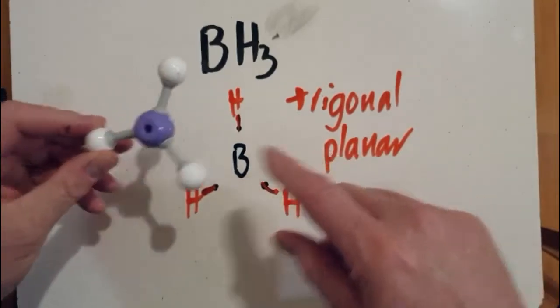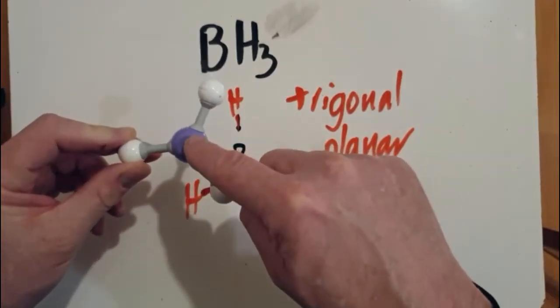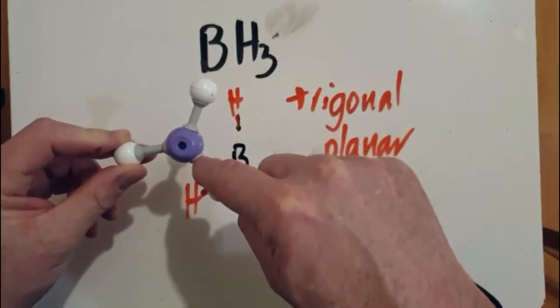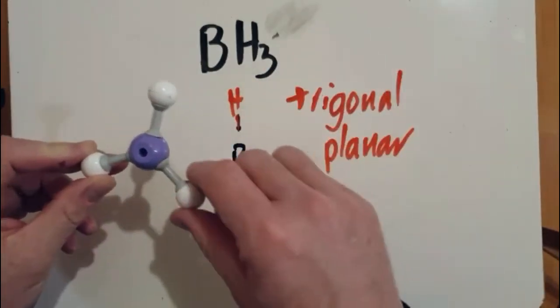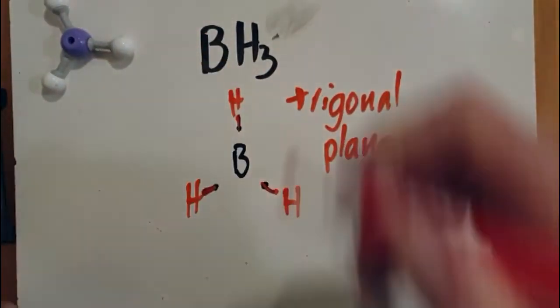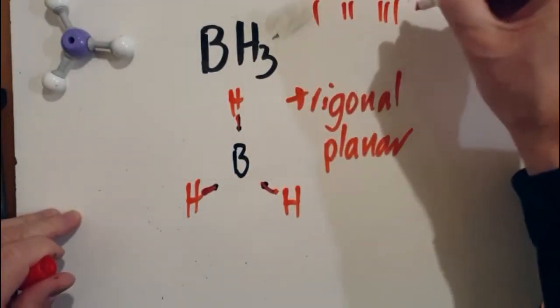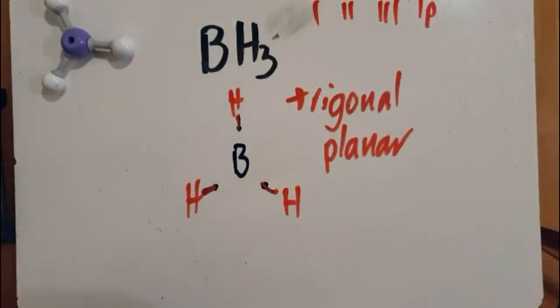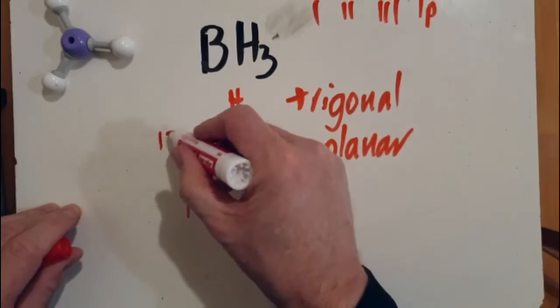So if they asked you, why is it this shape? The central atom has three electron domains and no lone pairs. And remember, an electron domain, well, it's a single, a double, a triple, a lone pair of electrons. So the bond angle there is 120 degrees.